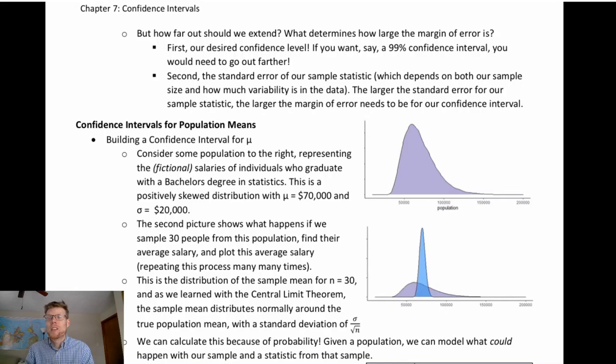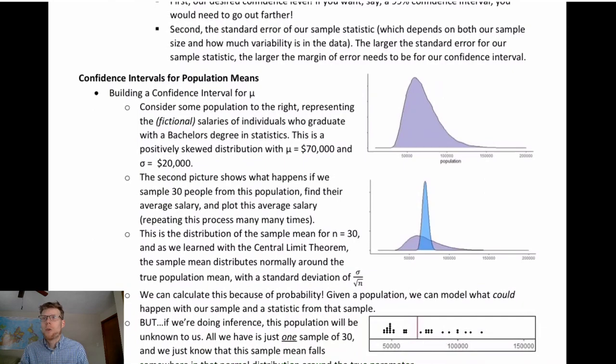The second factor is the standard error of our sample statistic — how much error we expect to have in our sample statistic given our sample size and how much variability there is in the variable itself. The larger the standard error in our sample statistic, the more error we should allow in the interval, and the farther out we need to stretch.